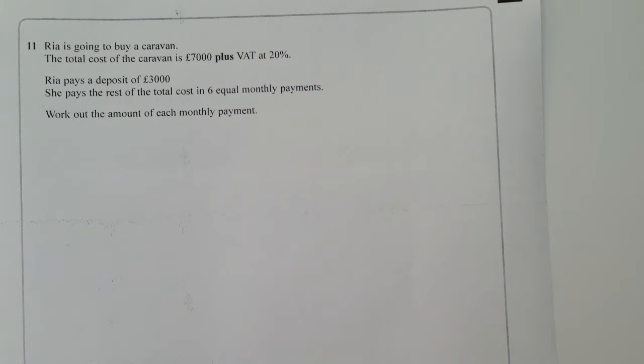So the first thing we need to do is work out the total cost of the caravan, which is £7,000 plus VAT at 20%. In other words, we need to work out 20% of £7,000 and then add it.